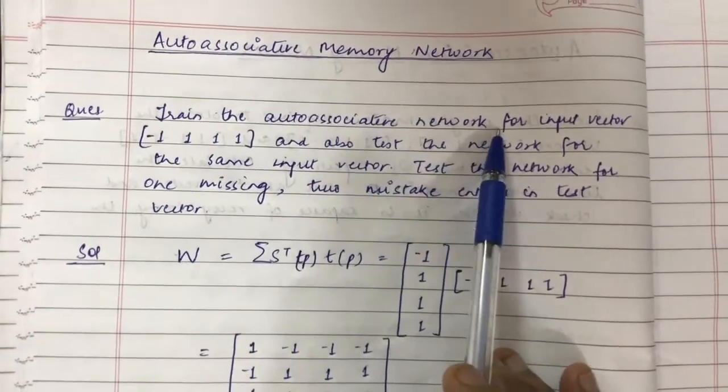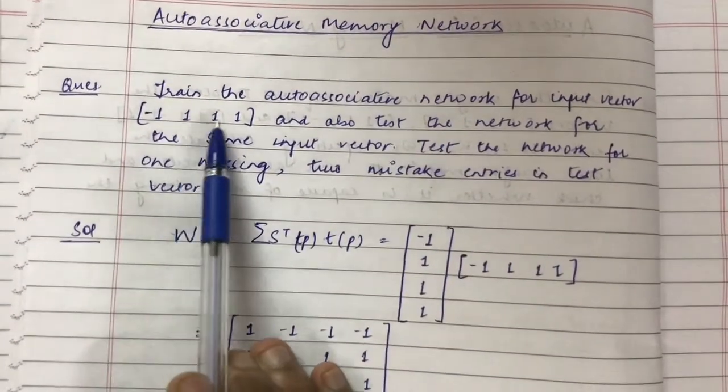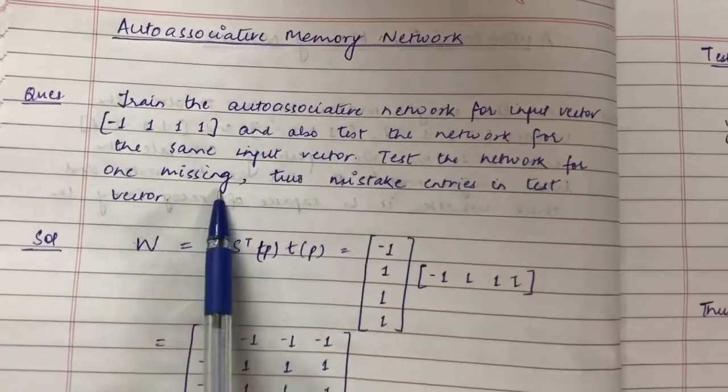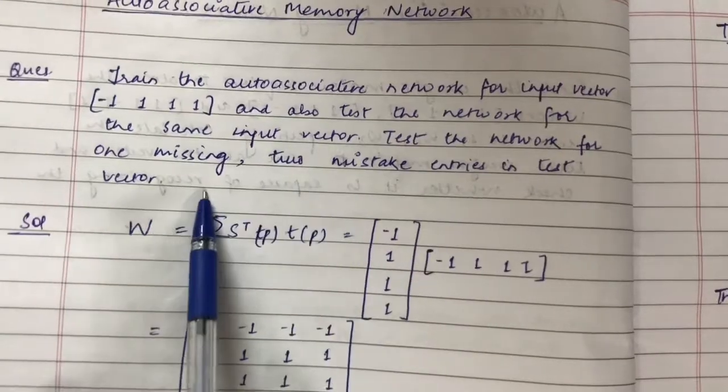Train the auto-associative network for input vector [-1, 1, 1, 1] and also test the network for the same input vector. Test the network for one missing entry and two mistaken entries in the test vector.